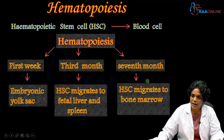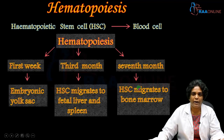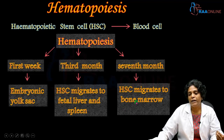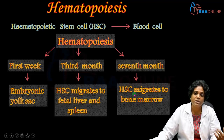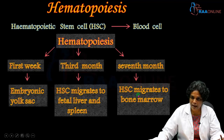From the seventh month onwards, after birth and as the individual ages, hematopoiesis happens only in the bone marrow — no longer in the liver or spleen. As the individual ages, hematopoiesis mainly occurs in the axial bones, primarily the pelvic bones, ribs, skull, and vertebrae. These are the main sites where hematopoiesis takes place.